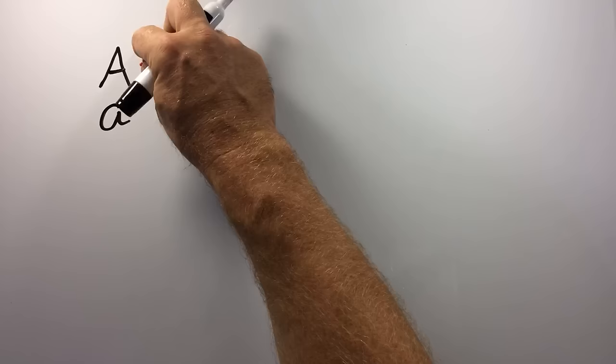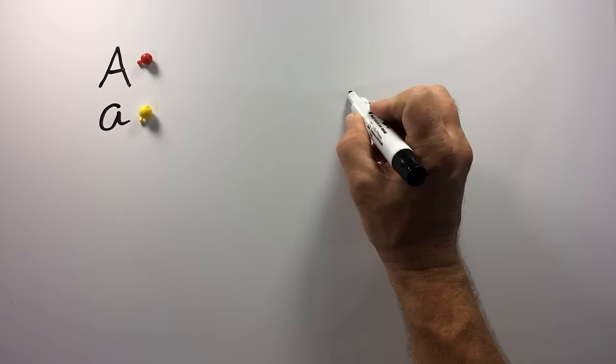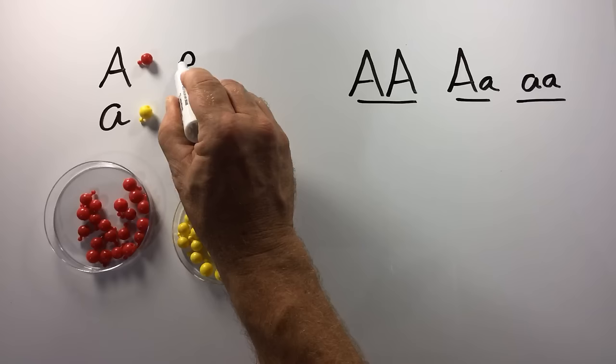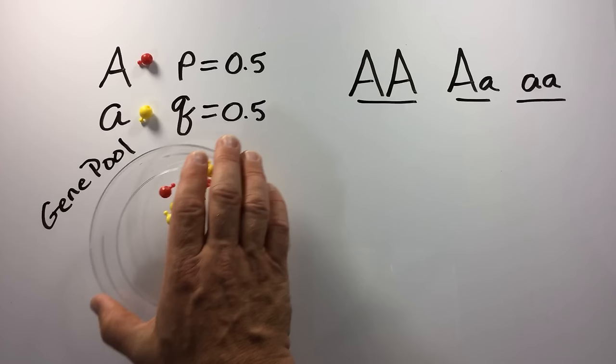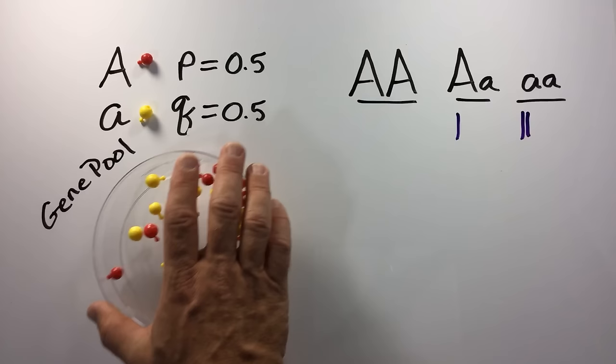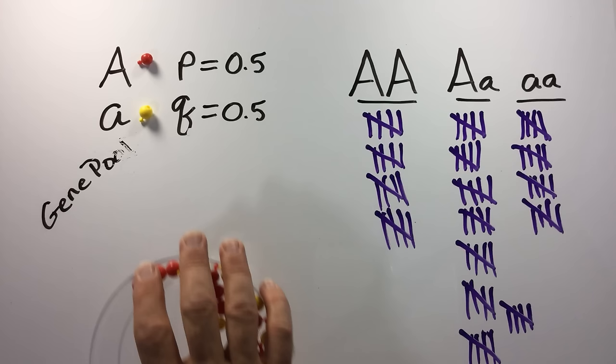These factors acting on a population will change allele and genotype frequencies from what the equation predicts. Let's consider a hypothetical population where we will use two different colored beads to represent our different alleles. Their frequencies are indicated by P and Q, and in this example they start off as being equal. We combine them to make our gene pool. Mixing them and drawing two out at random, we form heterozygotes, homozygous recessives, and continue this process until we ultimately have a population composed of 80 individuals.